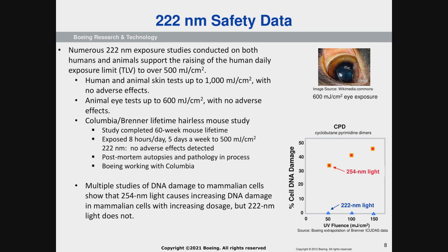Another graphic example shows the difference between 254 and 222. The horizontal axis is millijoules per square centimeter — essentially the dose of UV light — and for 254, as the total energy goes up, DNA damage as defined by CPDs — lesions on the DNA — goes up considerably. In the case of 222, along the bottom of the chart, even as the fluence goes up, there is really no change from zero. Further evidence that 222 is relatively — and potentially completely — harmless to humans.